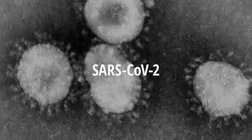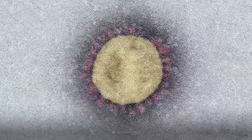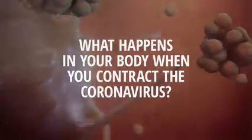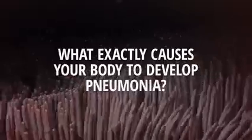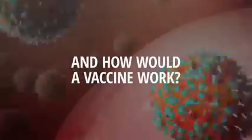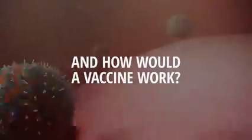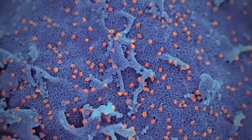This is SARS-CoV-2. It belongs to the family of coronaviruses, named for the crown-like spikes on their surfaces. SARS-CoV-2 can cause COVID-19, a contagious viral infection that attacks primarily your throat and lungs. What actually happens in your body when you contract the coronavirus? What exactly causes your body to develop pneumonia? And how would a vaccine work? The coronavirus must infect living cells in order to reproduce.